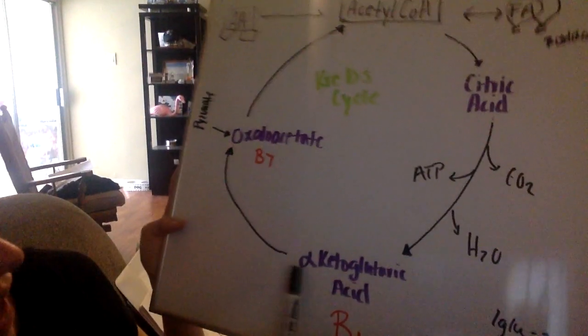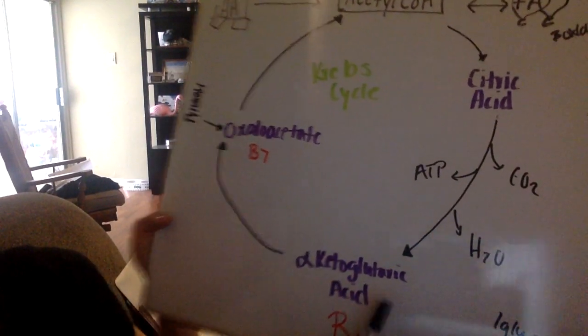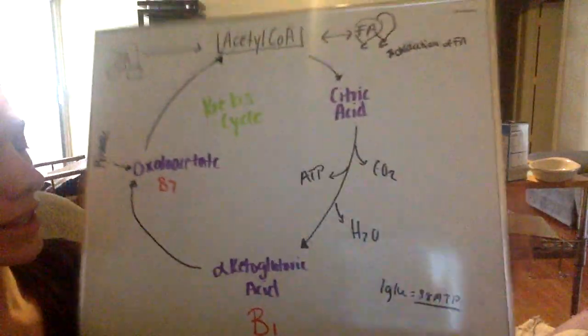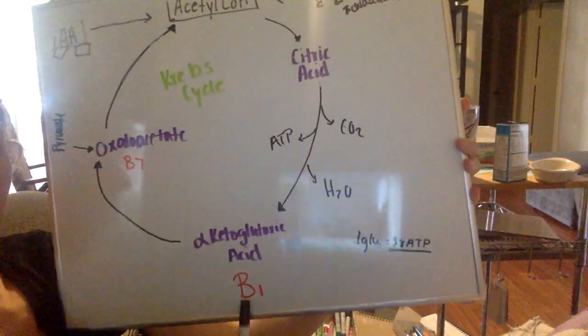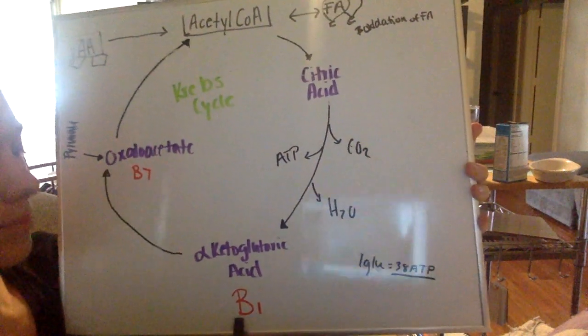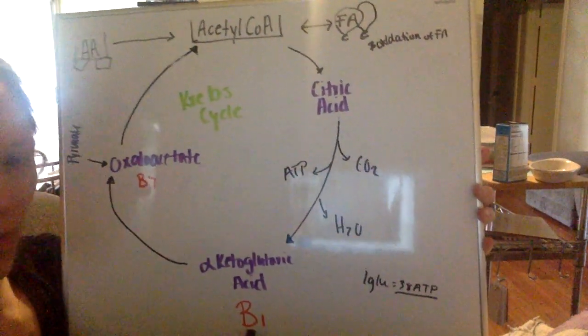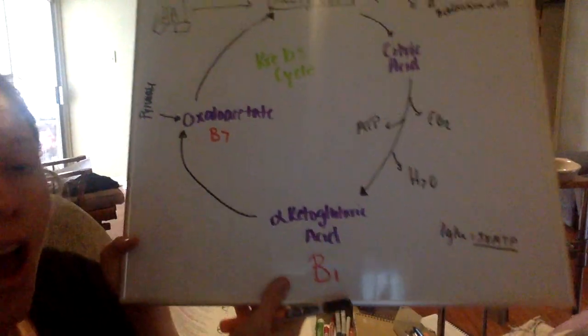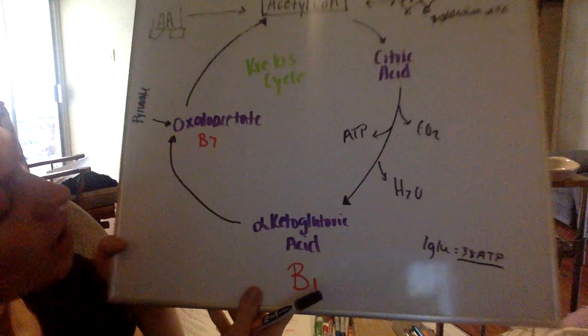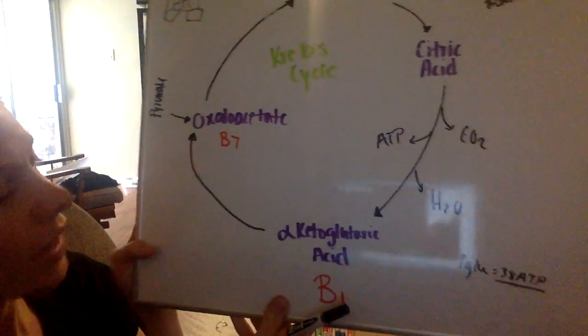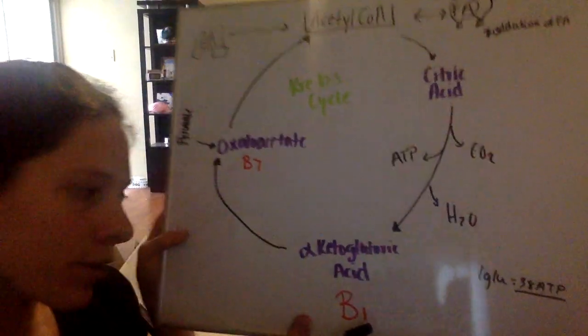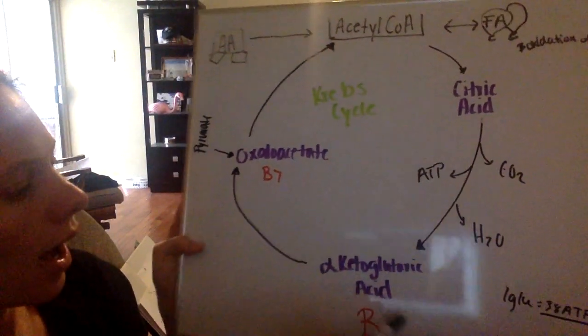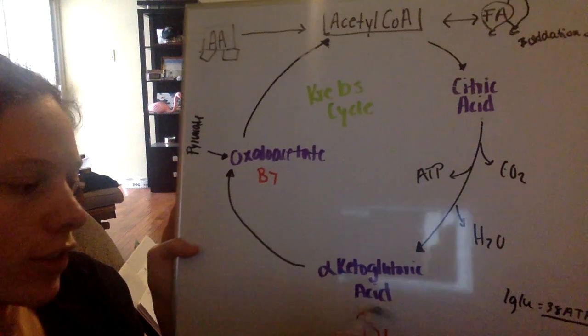So he meets alpha-ketoglutaric acid, which I have a hard time saying that fast. This is also using thiamine or B1, so this is his best relationship, his first relationship that's been pretty good. So his best relationship, relationship number one, he truly has a long-term relationship with alpha-ketoglutaric acid. However, we still have acid, he's still a little unsure.